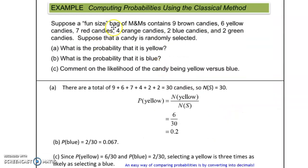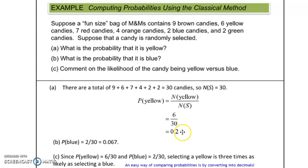Suppose we have this fun-sized bag of M&Ms with all of these values given. What is the probability that a randomly selected candy is yellow? Before we even take any candies out of the bag, it's how many yellows there are — 6 — divided by the total number of candies, which is 30. So 6 divided by 30 equals 0.2. This is classical probability. If we were to do an experiment on this, we wouldn't necessarily always get 0.2 — we could pick more or fewer yellows than expected. Experimental probability can change, but classical or theoretical probability will always be the same.